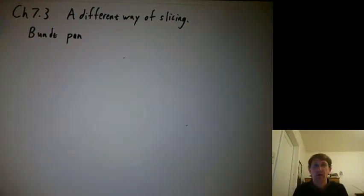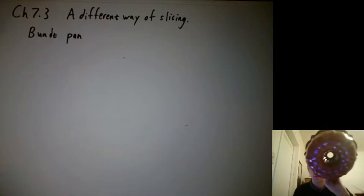In chapter 7.3 we talk about a very different way of slicing instead of washers or discs. Let's give a demonstration by looking at this cake pan. The shape of this is called a bundt pan.